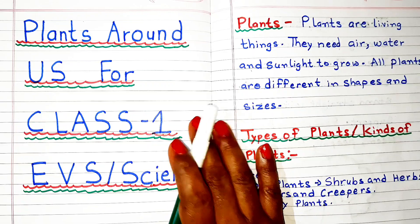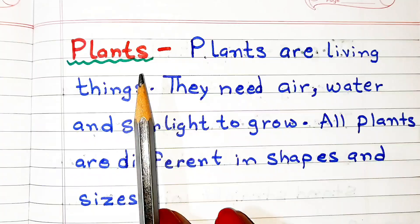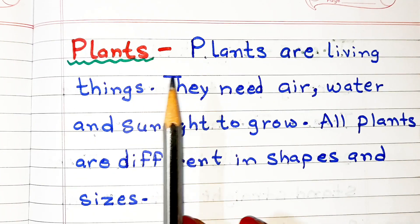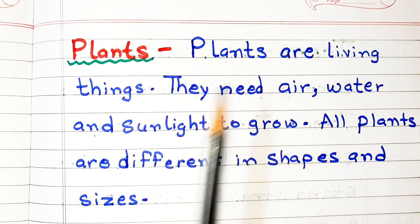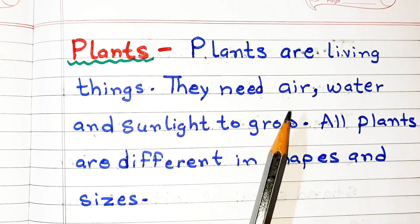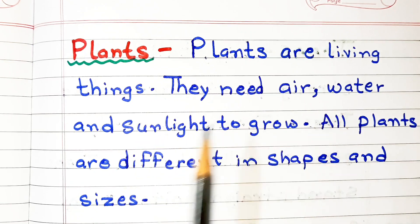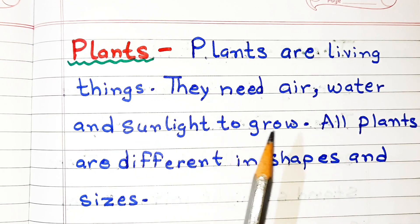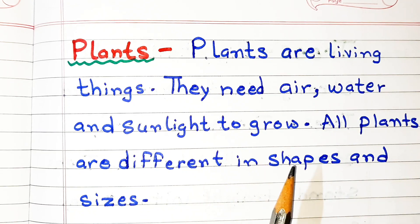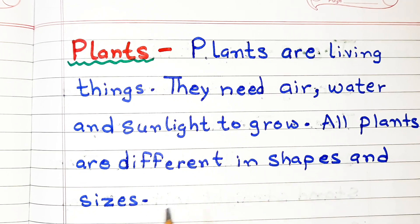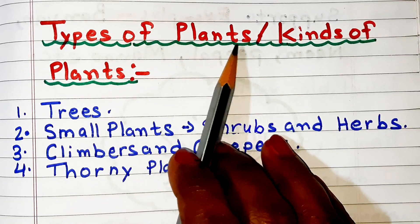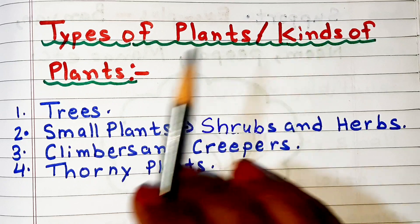Let's begin with what are plants. Plants are living things — they need air, water, and sunlight to grow. All plants are different in shapes and sizes.